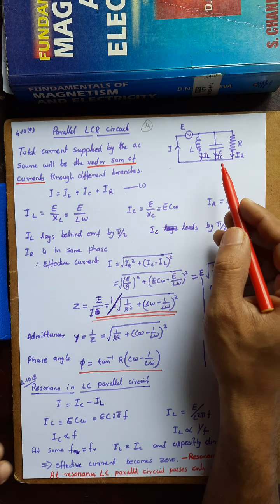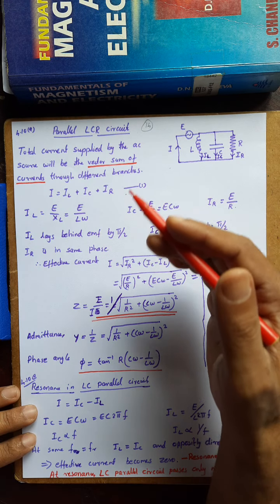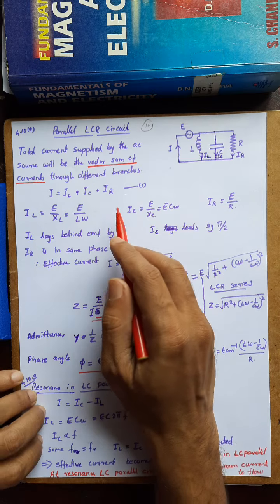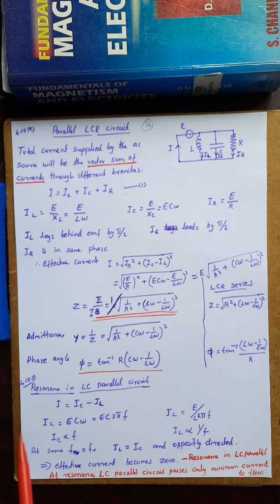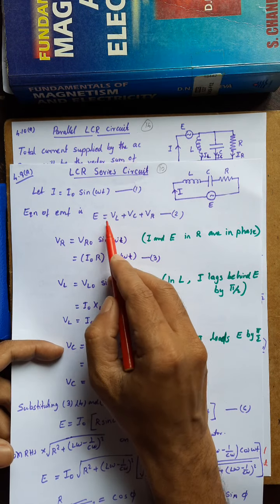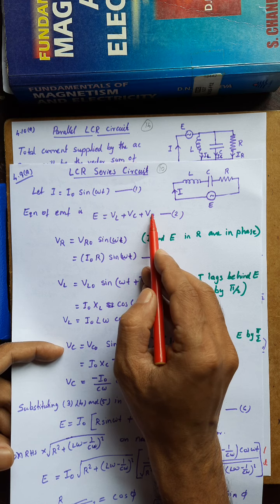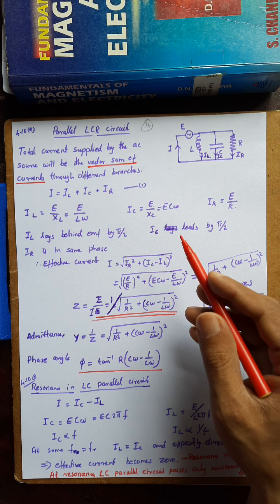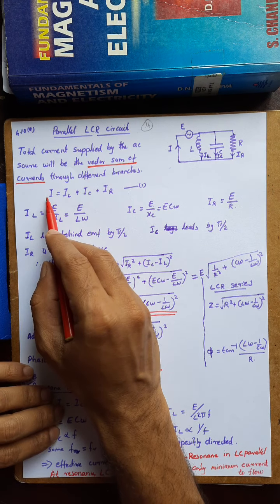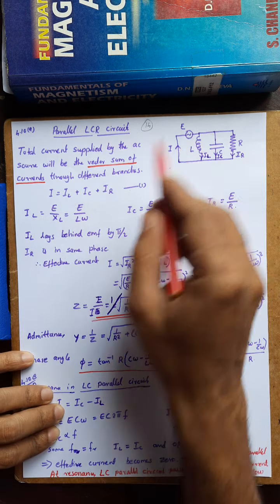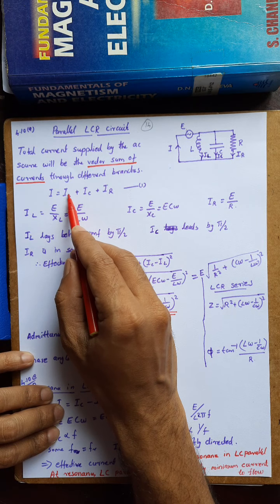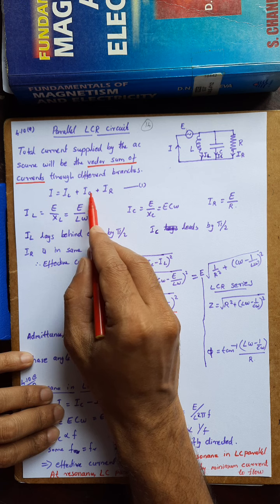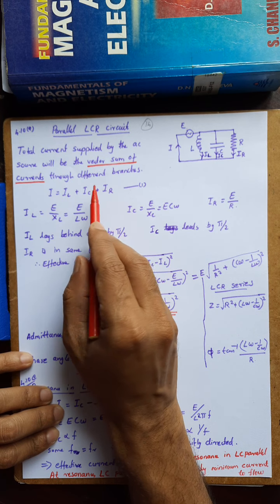In a series LCR circuit, the analysis started by writing the equation for EMF — the total EMF is dropped across inductance, capacitance, and resistance. For the parallel connection, the current equation is used instead. The total current I drawn from this source E is equal to the vector sum of current through inductance, current through capacitance, plus current through resistance.